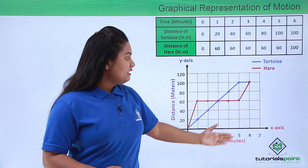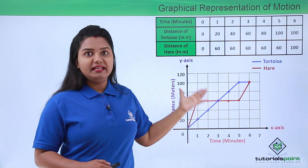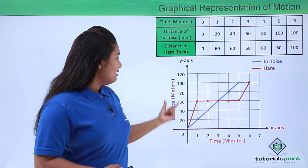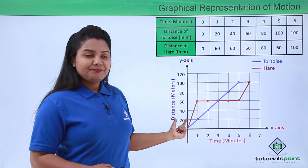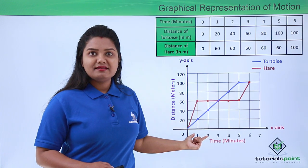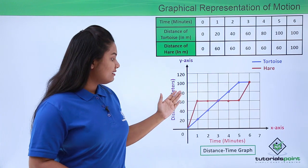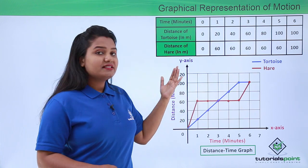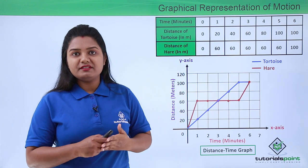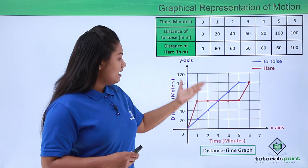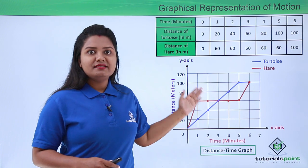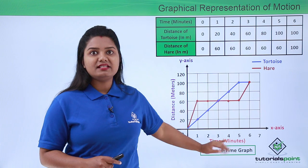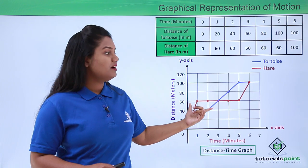This kind of representation of data about the motion of an object — wherein distance is taken along the y-axis and time is taken along the x-axis — is called a distance-time graph. This is one of the various graphical representations of the motion of an object, and it is termed a distance-time graph since we have plotted distance against time.